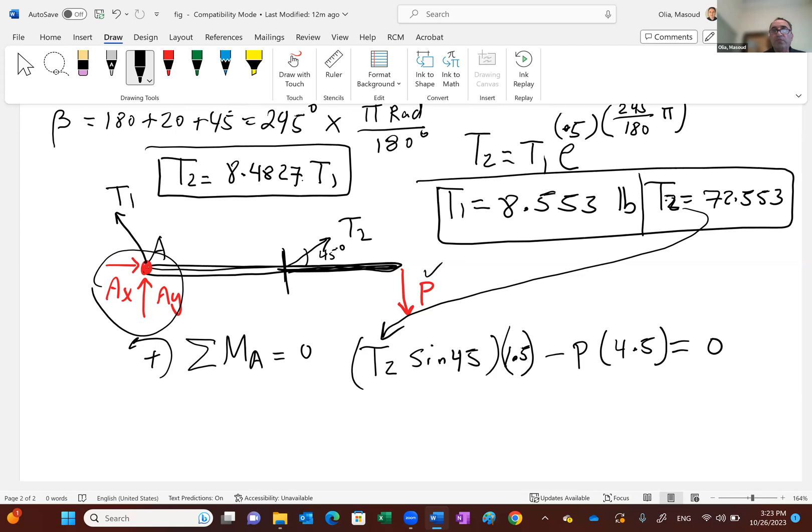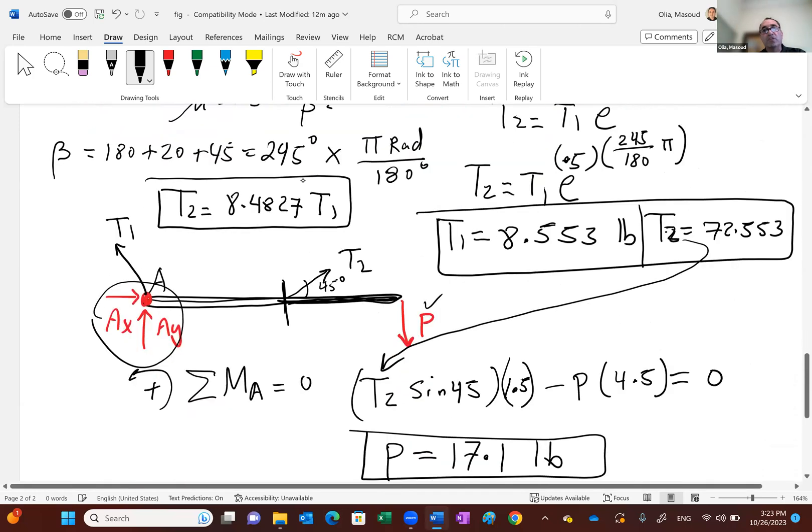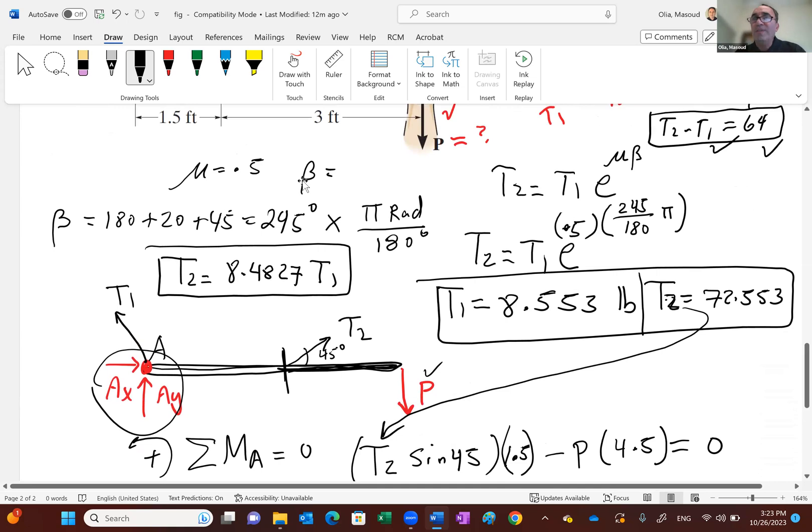Plug in for the T2, as I said, 72.553, and you solve for the load needed to keep this stationary. You need 17.1 pound load to be applied to that handle, to the end of that handle to keep this stationary. So I think this gave you an idea how you handle the belt frictions in general.